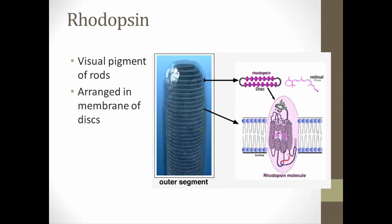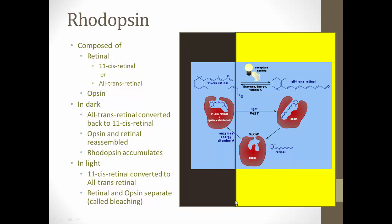Rhodopsin is arranged in the membrane discs of the outer segment. It's composed of two parts: retinol and opsin. Retinol comes in two forms: 11-cis retinol and all-trans retinol. In the dark, retinol exists in the 11-cis form. When a photon of light hits retinol, it causes the retinol to straighten out and become all-trans retinol.